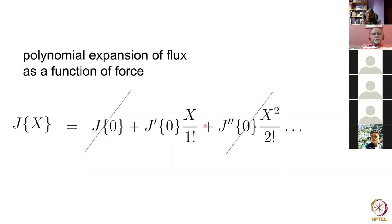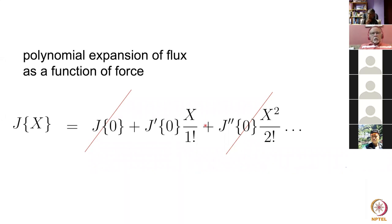The obvious question is how large the force must be before this proportionality breaks down. The answer is that you simply have to do an experiment to see whether J proportional to x holds. There is no rigorous way to determine the critical magnitude. I once asked a physicist whether Ohm's law is satisfied at very large potential differences — the answer is complicated by sample heating at large currents. I will show another example where proportionality between force and flux clearly breaks down at large forces: grain boundary motion.